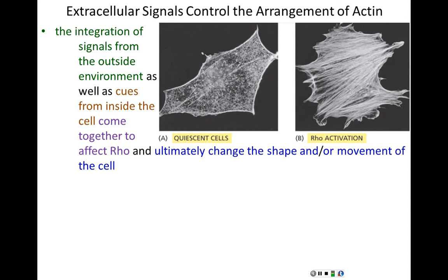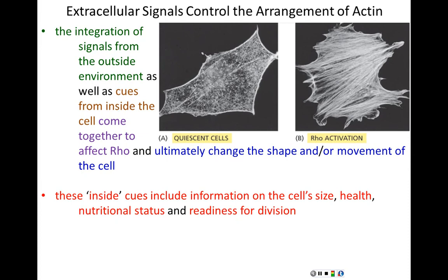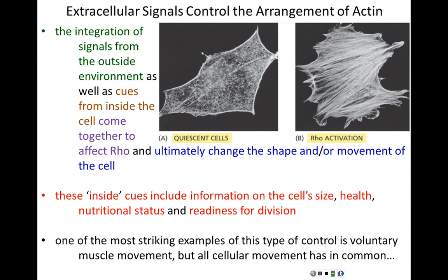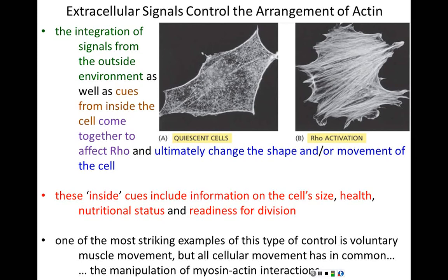Crosstalk allows these signals to integrate and culminate at Rho. The intracellular cues revolve around cell health, cell size, its readiness for division, and so on. One of the most striking examples of this general type of control — cellular movement in an actin-dependent manner — is highlighted by the contraction of voluntary muscles. All cellular movement shares in common the principles that will be highlighted using voluntary muscle contraction, all revolving around the manipulation of actin and myosin interactions.